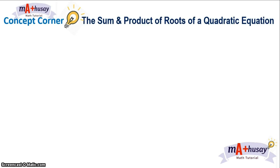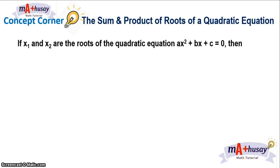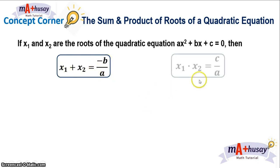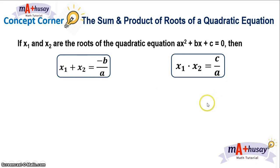In summary, if x₁ and x₂ are the roots of quadratic equation ax² + bx + c = 0, then the sum of the roots is equal to negative b over a and the product is c over a. That is the relationship between the coefficients and the roots of a quadratic equation. We can use these coefficients to directly solve the sum and product of the roots.